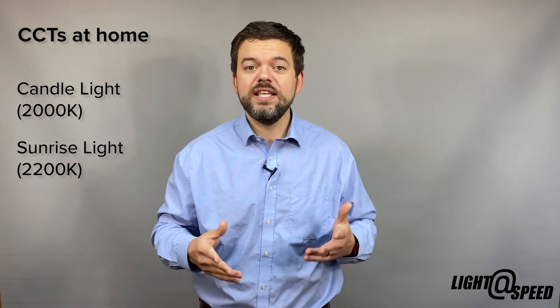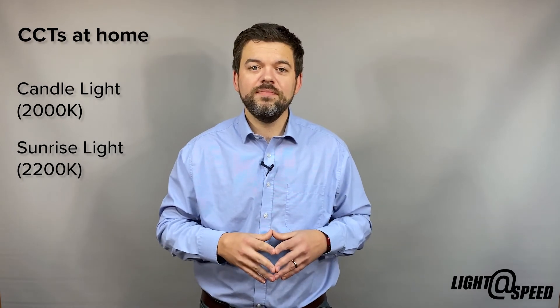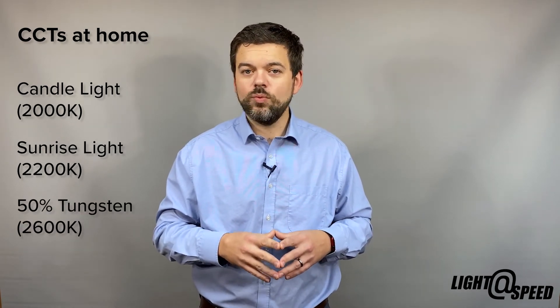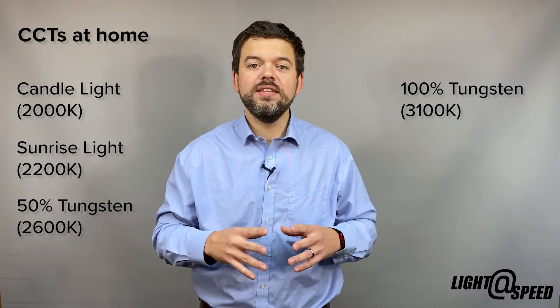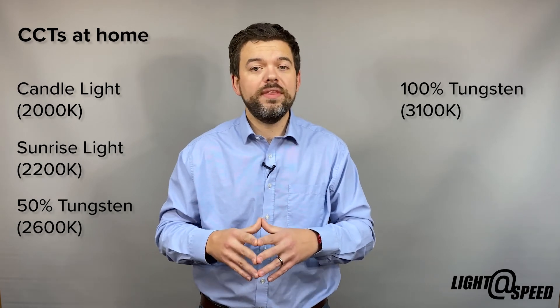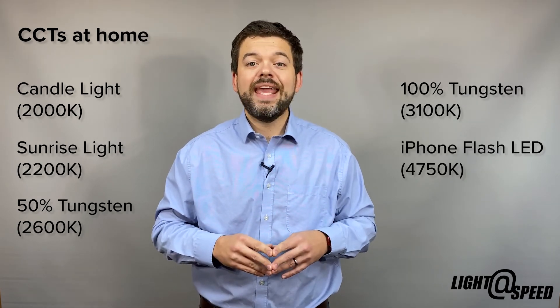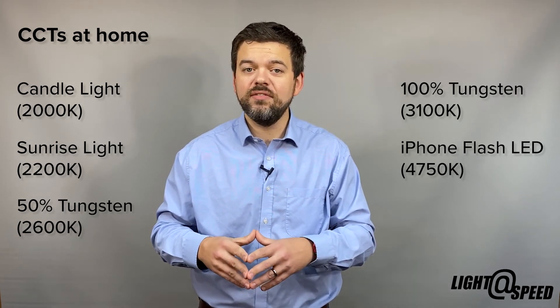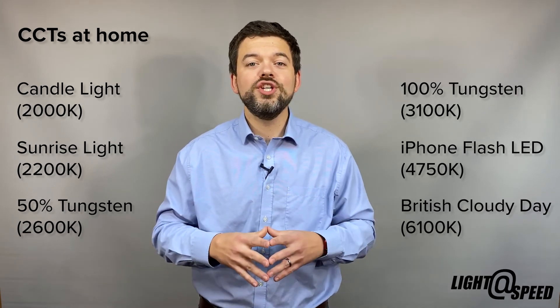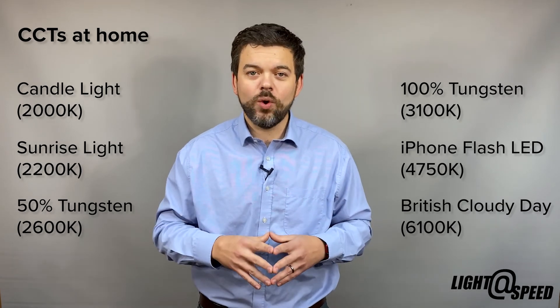Sunlight at sunrise is 2200K. Tungsten halogen lamps, when dimmed to 50% of their brightness, is 2600K. A tungsten halogen at full brightness has a CCT of about 3100K. The LED flashlight on the back of my iPhone 11 Pro has a CCT of 4750K. And beautiful British cloudy daylight was 6100K.